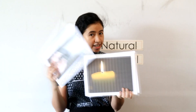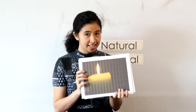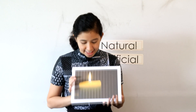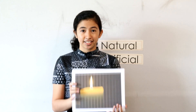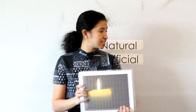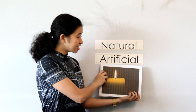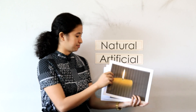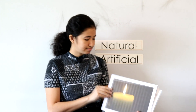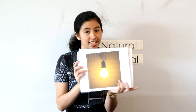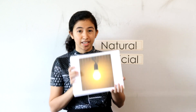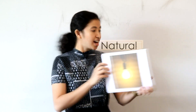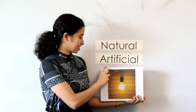And what is this light? This is a candle. A candle gives us an artificial light. And this is a light bulb. A light bulb also gives us an artificial light.